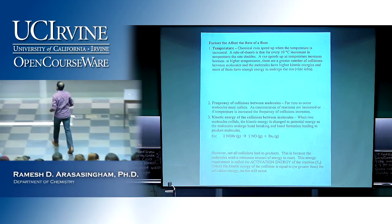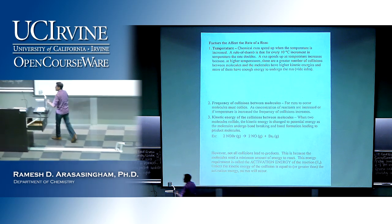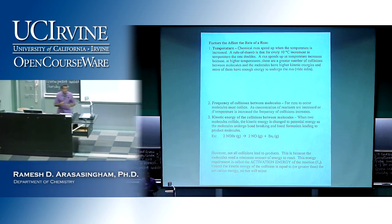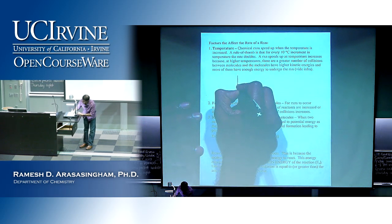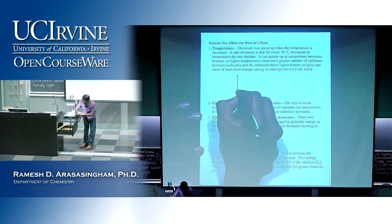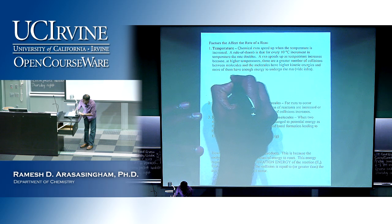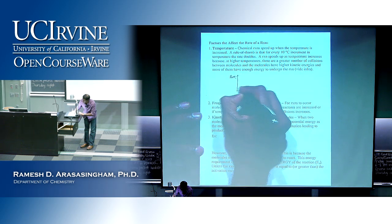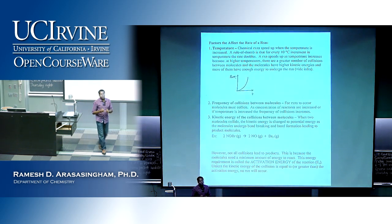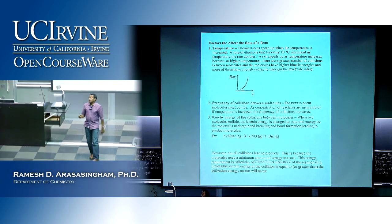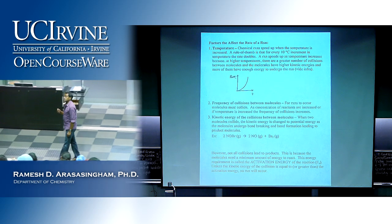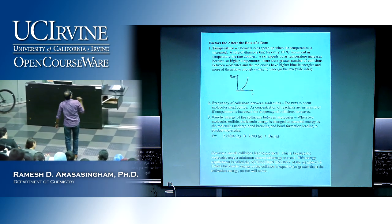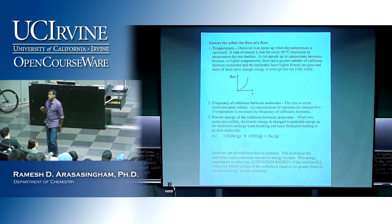So temperature is the first factor that affects the rate of a reaction. If you want to make a plot of how temperature affects rate — if you plot the rate as a function of temperature — it kind of increases like that. Now moving on to the second property: that is the frequency of collisions.